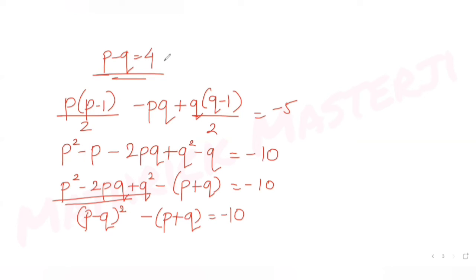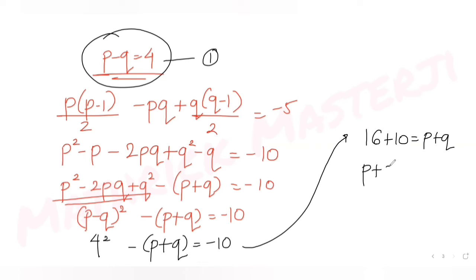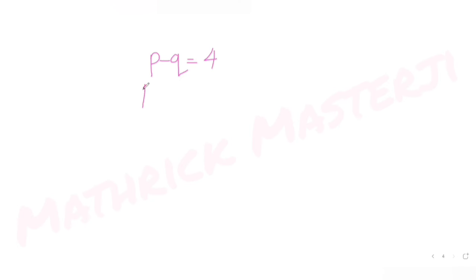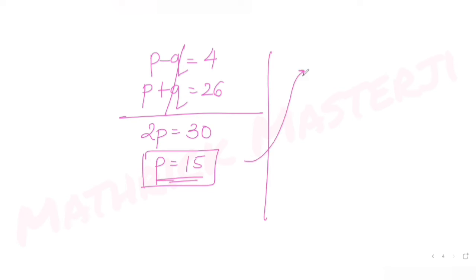Substituting p minus q equals 4: 4 squared minus (p plus q) equals minus 10, so 16 plus 10 equals p plus q, giving p plus q equals 26. Now adding the two equations — p minus q equals 4 and p plus q equals 26 — gives 2p equals 30, so p equals 15. Then q equals 26 minus 15, which is 11.